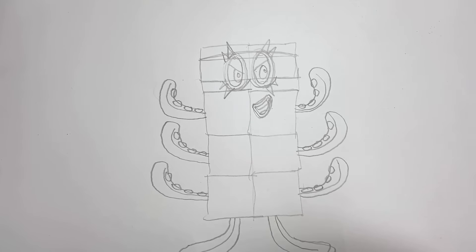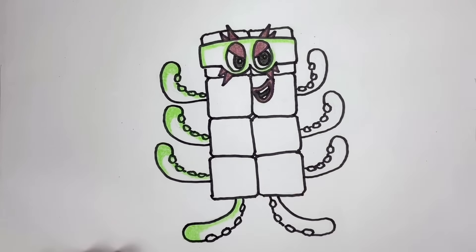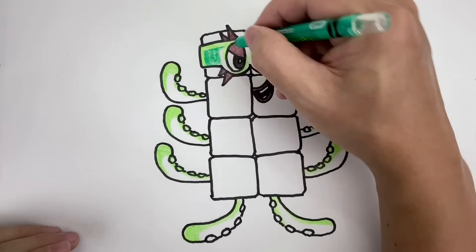Next, use the light green crayon to color the upper left edges of his mask, arms, and legs. Then use the darker green crayon to color in the rest.